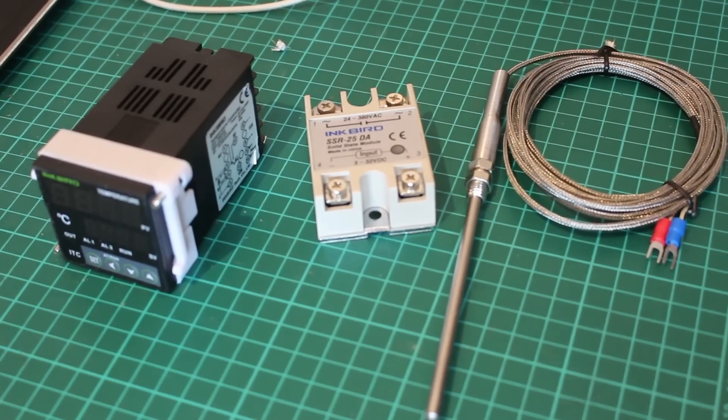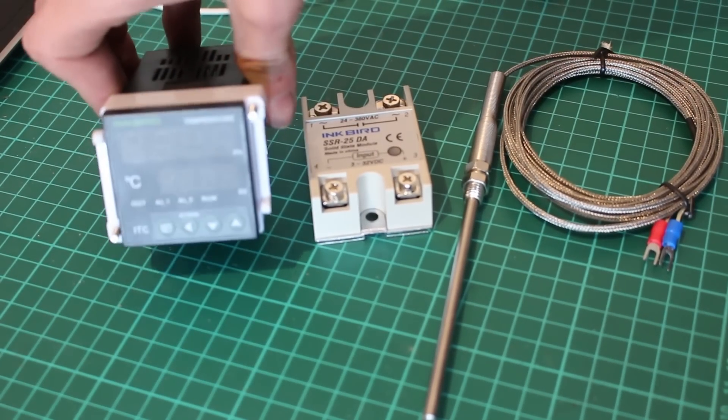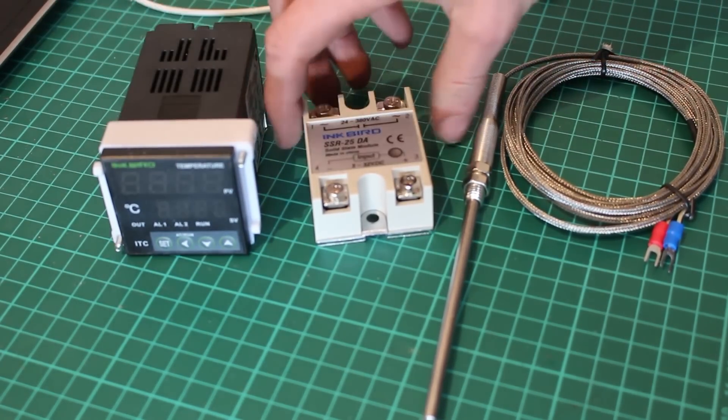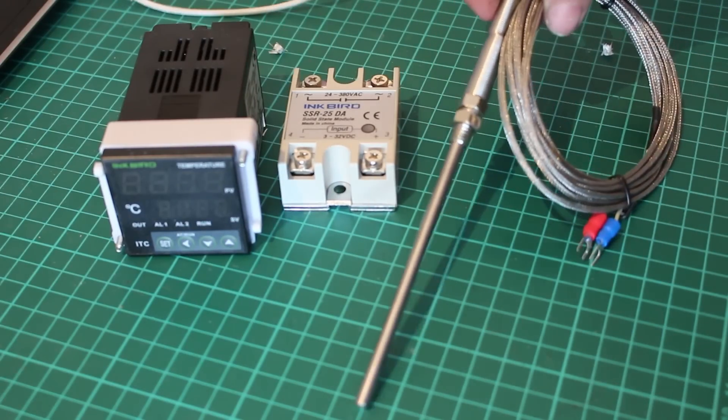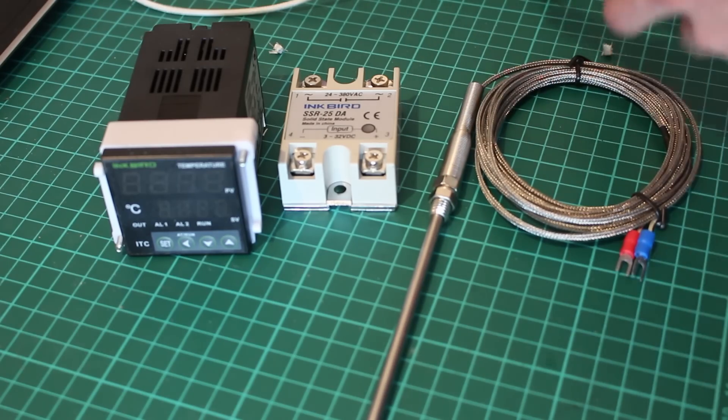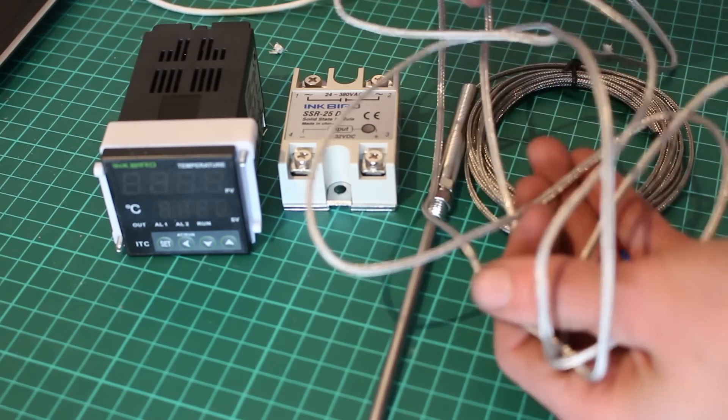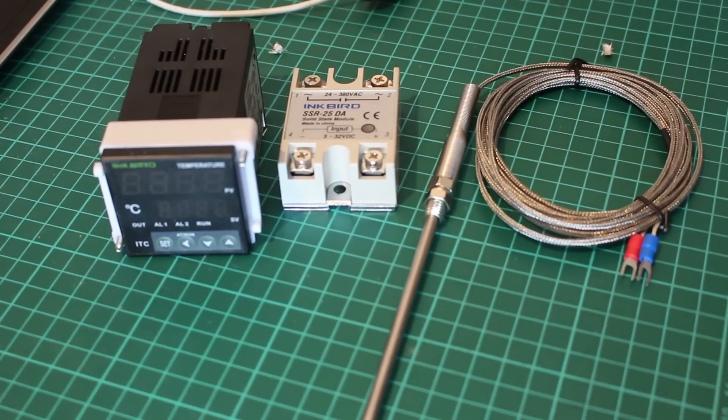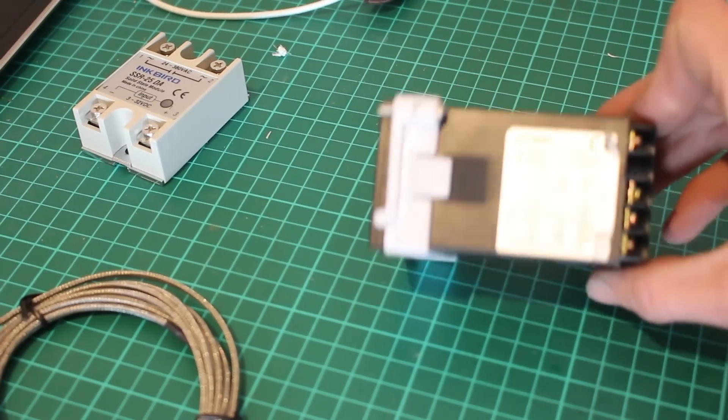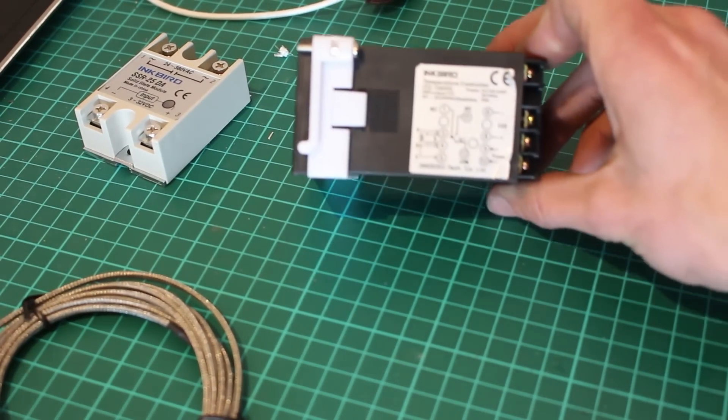These are all of the electronic components that you're going to need. On the left I've got the PID temperature controller and then in the middle I've got a solid state relay that can switch up to 45 amps, and on the right I've got a high temperature 1200 degrees Celsius type K thermocouple. My PID controller did come with a smaller thermocouple but that was only rated to 400 degrees Celsius so I'm not going to be using it. There will be a link to where I bought all of these in the description down below.